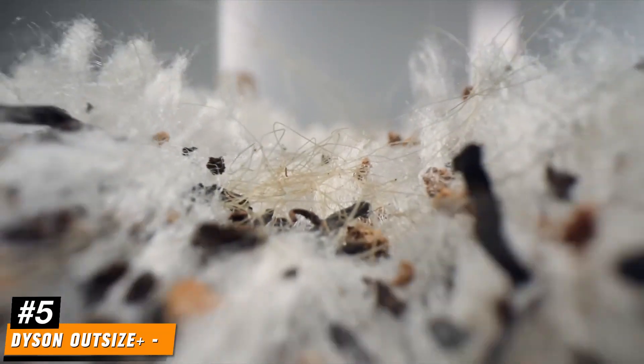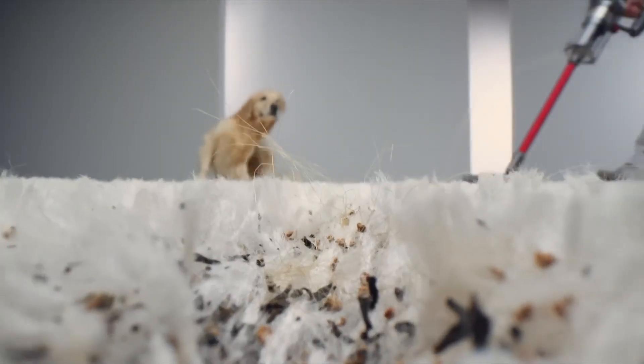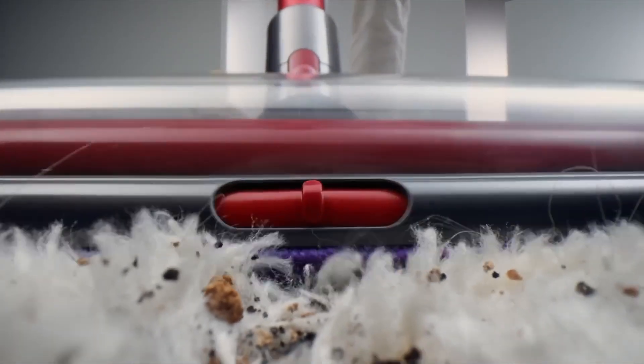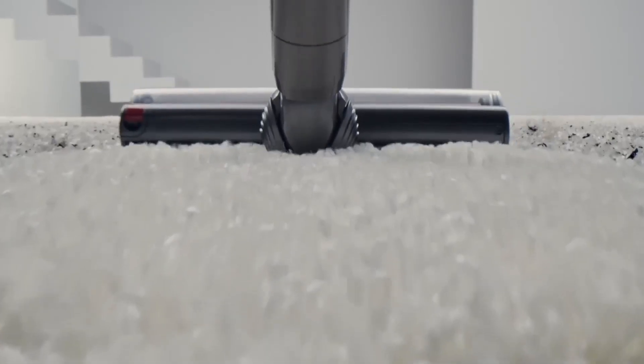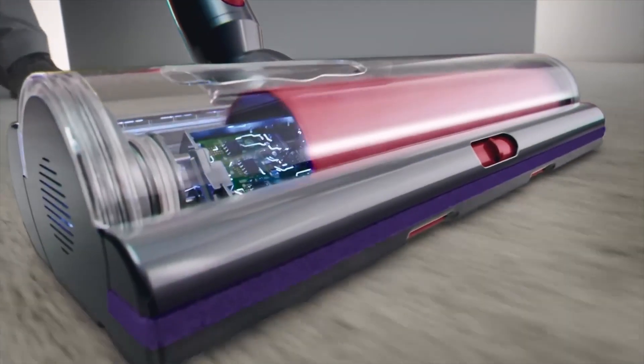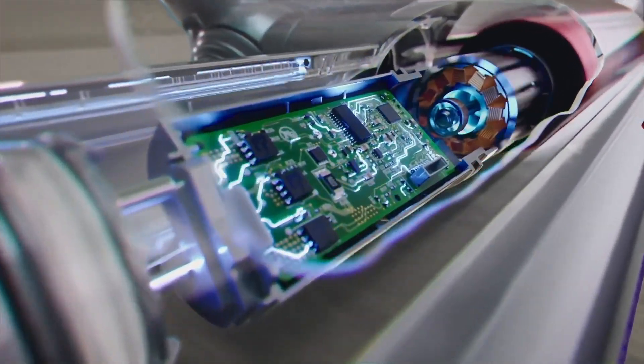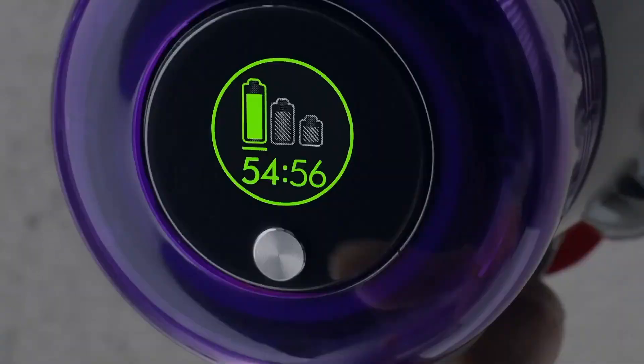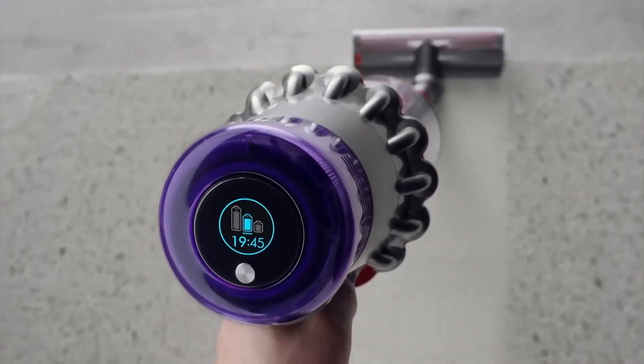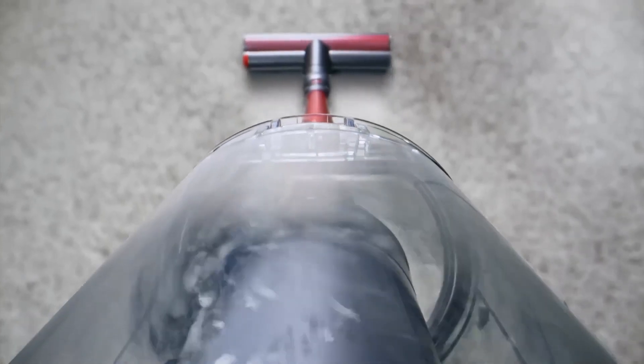Number 5. Dyson Outsize Plus. The Dyson Outsize Plus is a powerful cordless vacuum cleaner that stands out in the competitive market of home cleaning appliances. With its impressive specifications and features, it has quickly gained popularity among consumers looking for efficiency and effectiveness in their cleaning routines. As of October 2023, the Dyson Outsize Plus is available at various price points across different online retailers, typically ranging from $799 to $899, depending on the specific sales and promotions being offered.